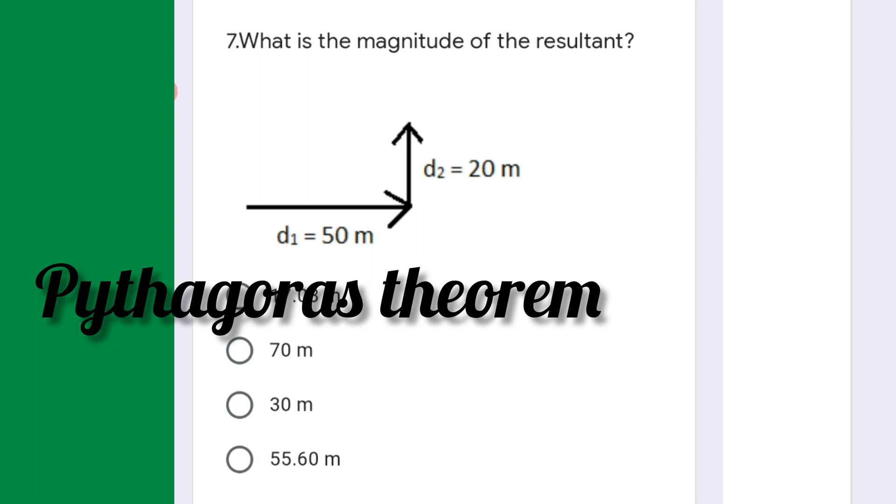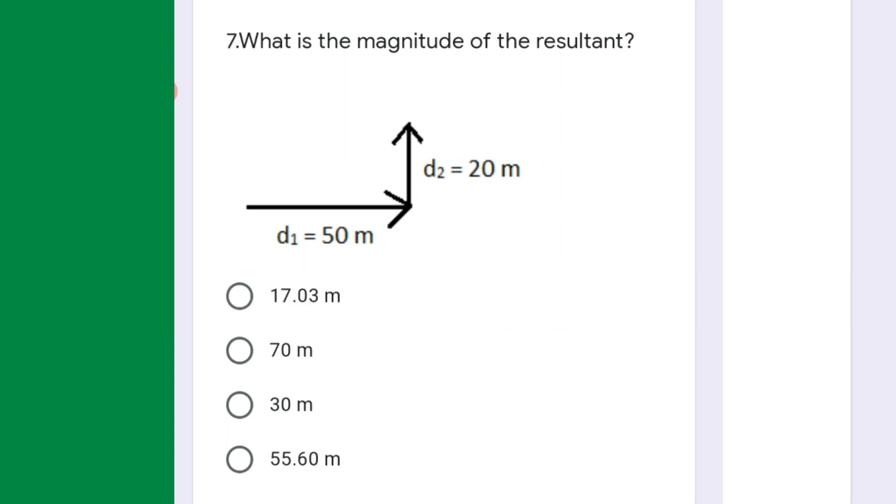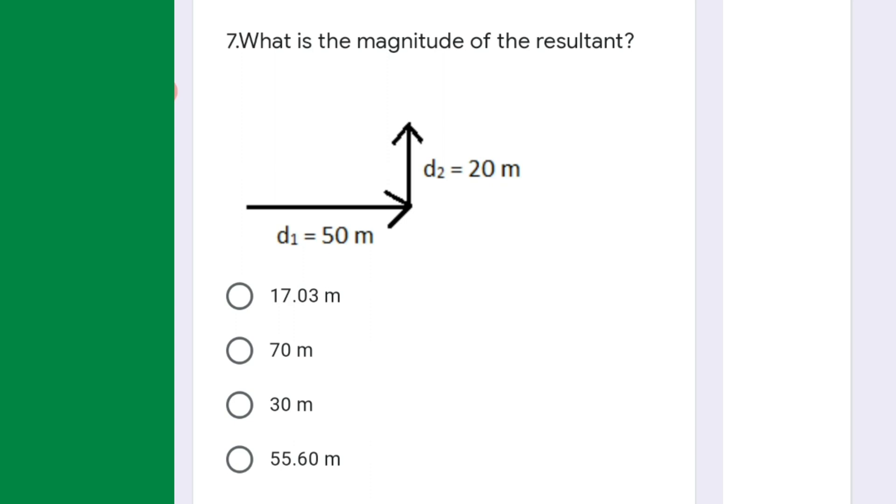Here, resultant will be equal to square root of 50 squared plus 20 squared, and when we calculate it, it will be nearly 55.60 meters. This is a very important question which is frequently asked in exams.